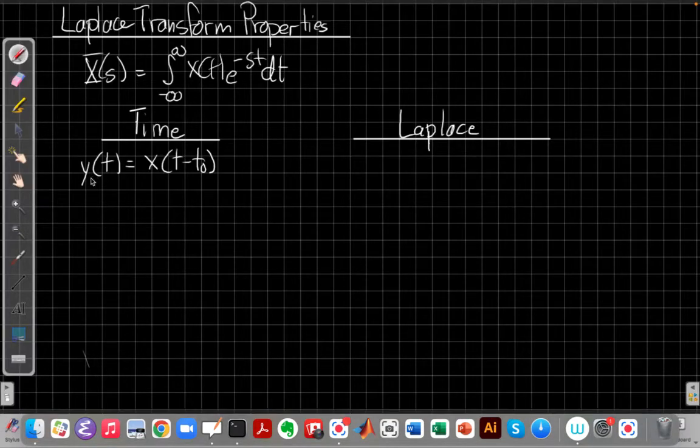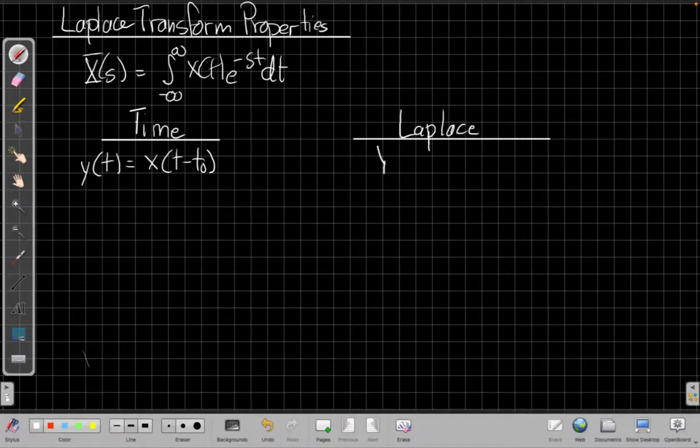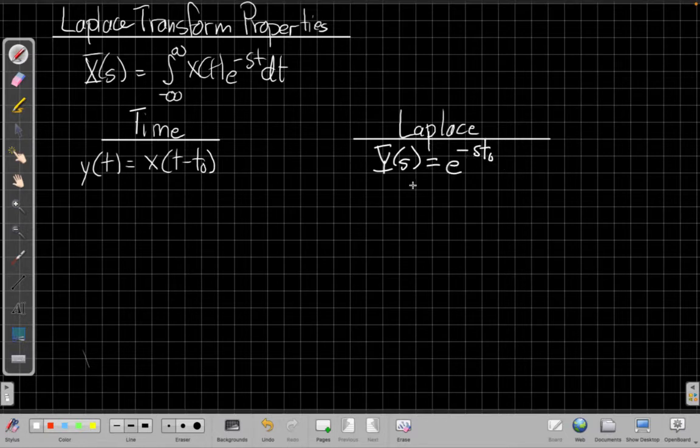So now, for example, the first one we've seen frequently, if I have y of t as just a shifted signal in time, pause for a minute and say what you think is going to happen with Laplace. You should be able to guess by now. Right, a shift in time is multiplying by a complex exponential in the other domain. So this will be e to the minus s t-naught, the amount of the shift, times x of s.